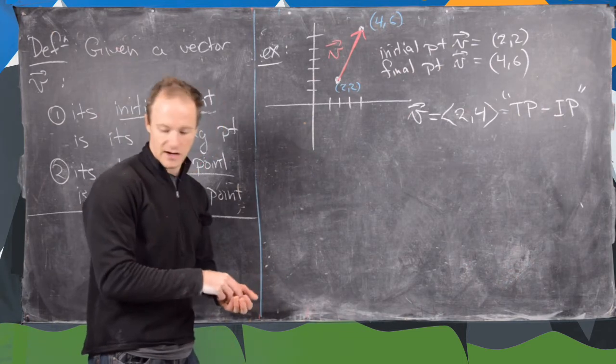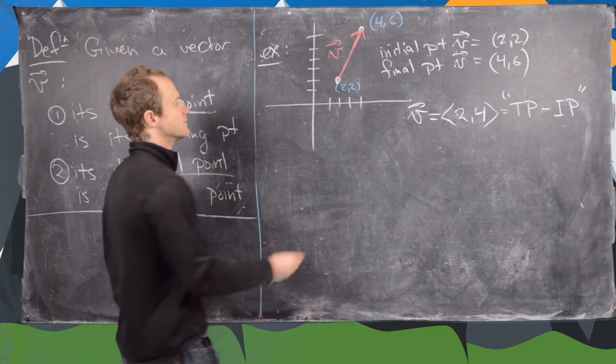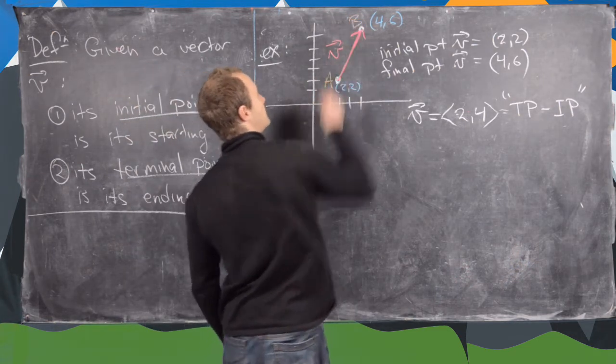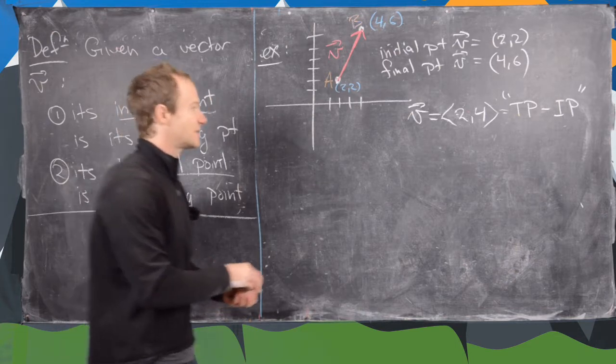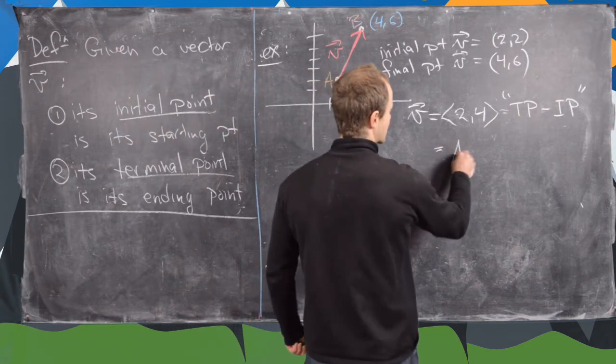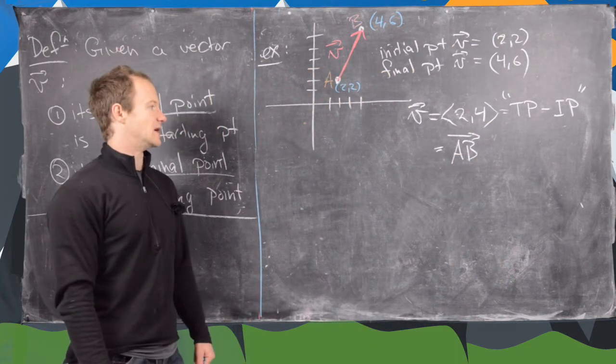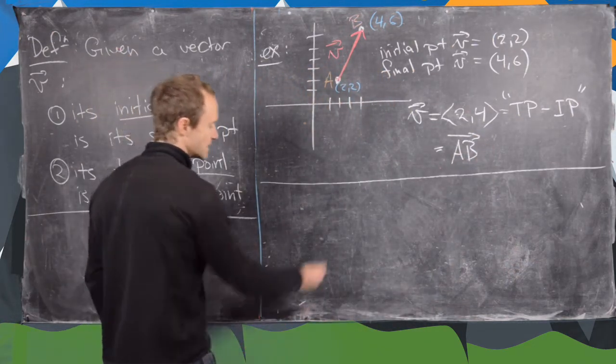Another way that we could notate this is as follows. So if we call this point A and this point B, then we would sometimes call this vector AB with an arrow over it. Let's look at one more example.